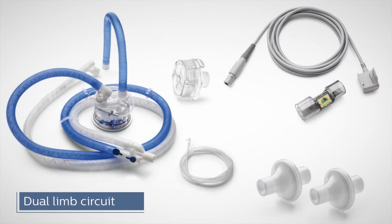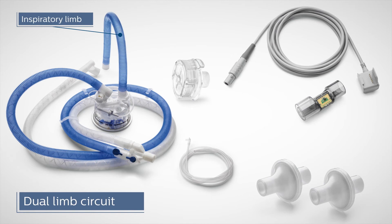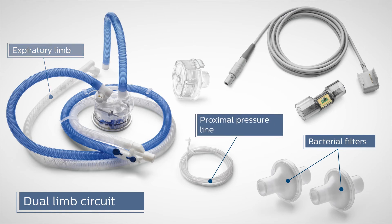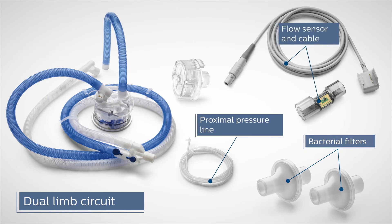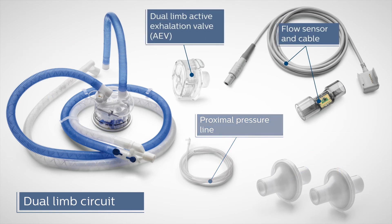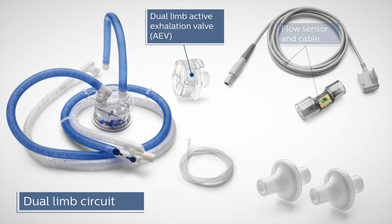The dual limb circuit has a blue inspiratory limb, a clear or white expiratory limb, two bacterial filters, a proximal pressure line, flow sensor with cable, and a dual limb active exhalation valve, referred to as the AEV.